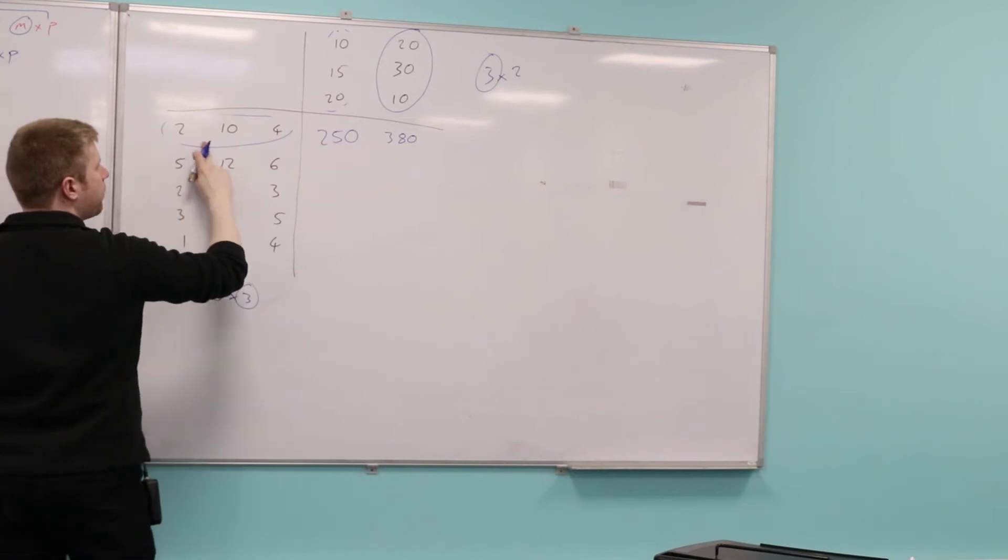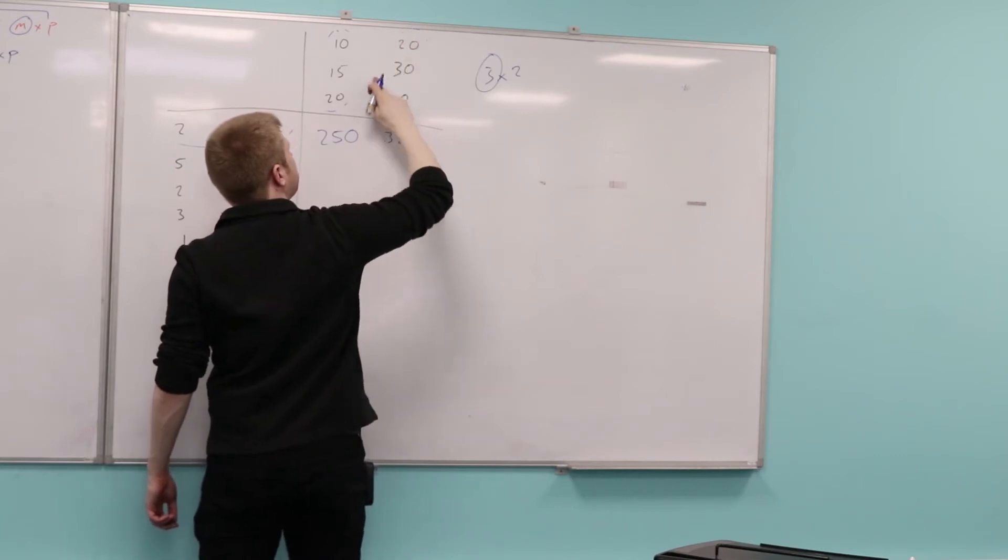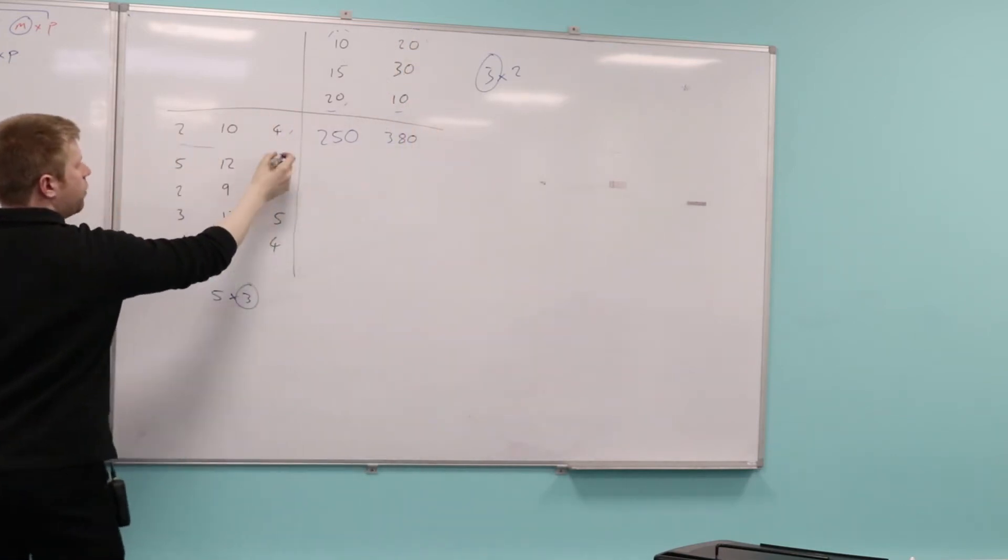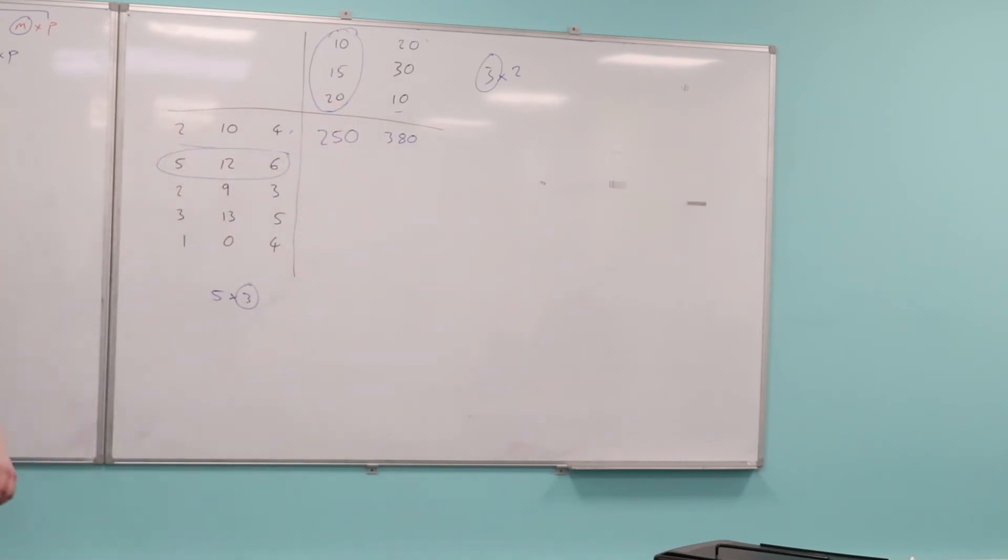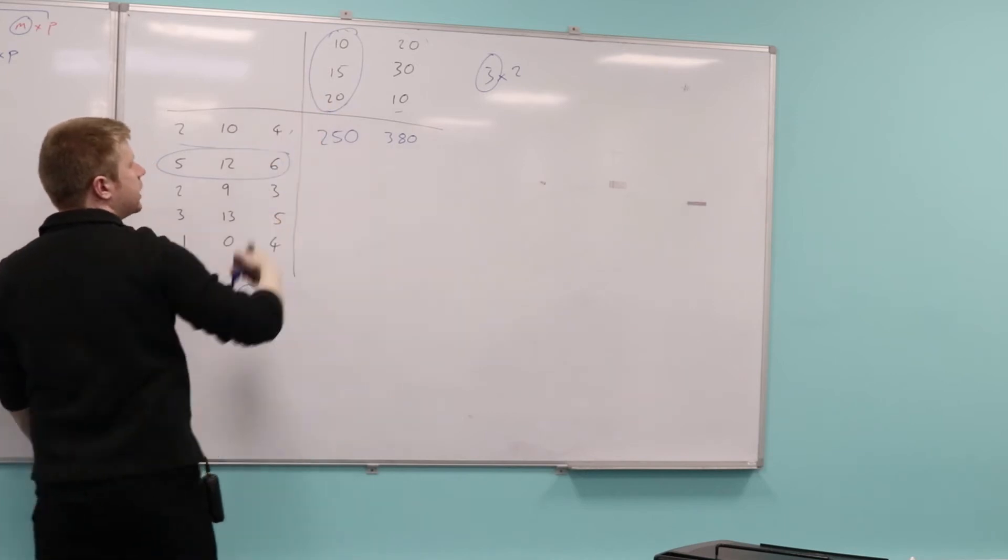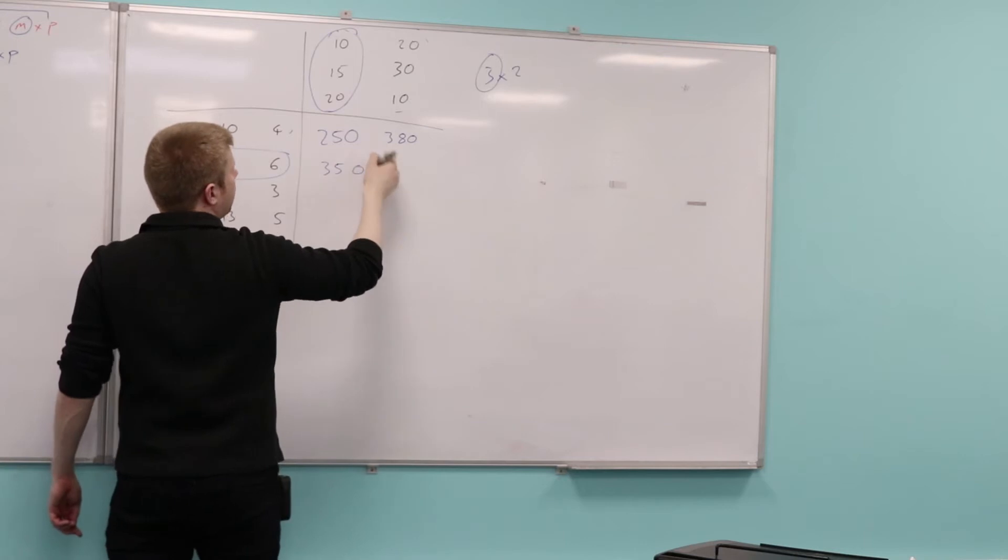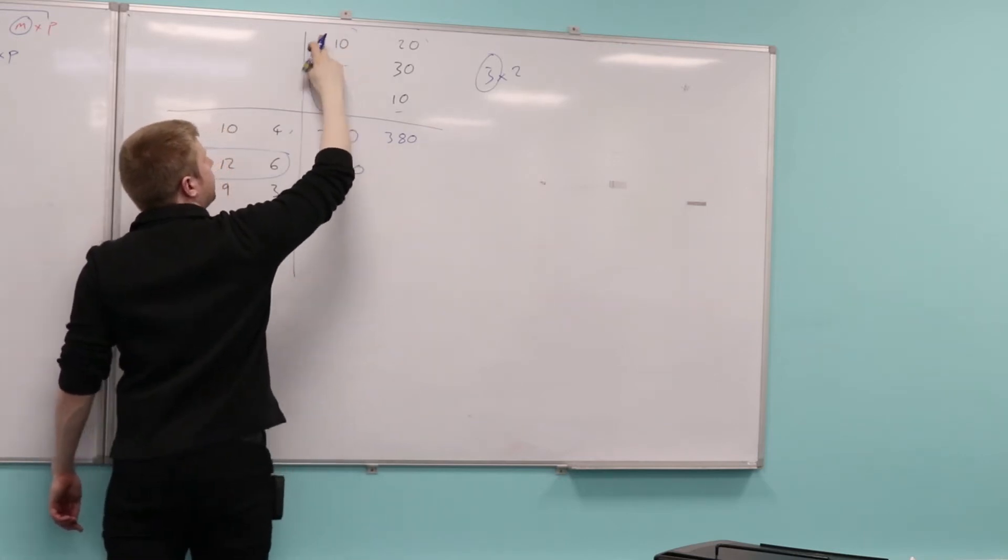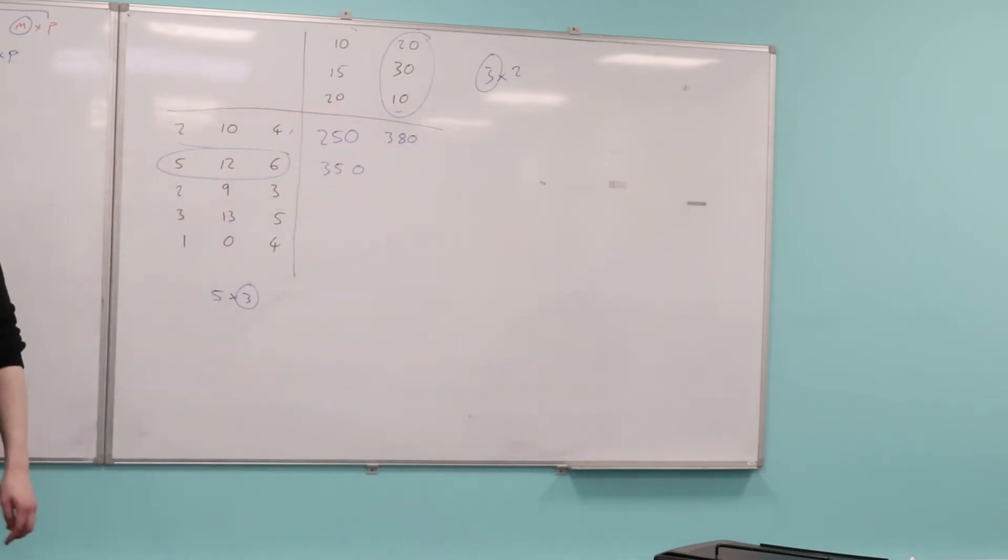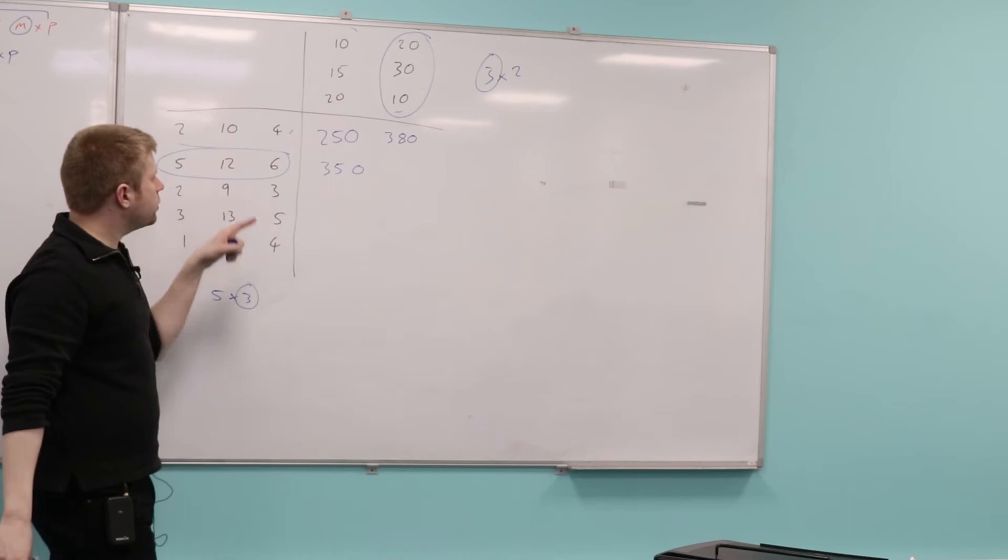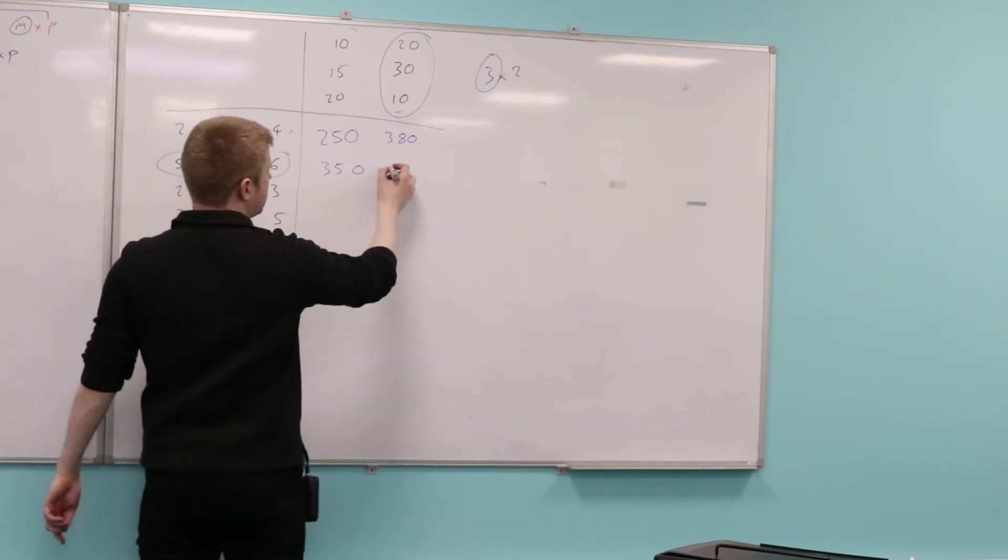This element here would be this row and this column, and multiply the corresponding elements together. So 5 times 10 plus 12 times 15 plus 6 times 20. What goes there? 350. This element here would be still this row, but now this column. So 5 times 20 plus 12 times 30 plus 6 times 10. What do we get? 520.